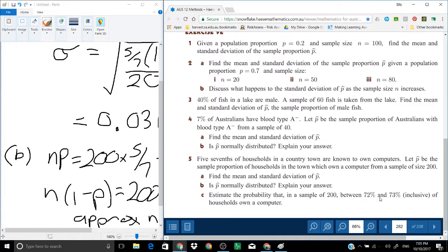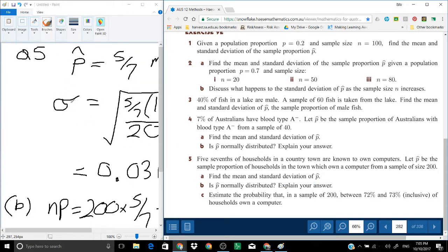Let's have a look at question C. You can estimate the probability that in a sample of 200, between 72% and 73% inclusive of households owns a computer. Since it is normally distributed, you can actually use a normal approximation for this. Basically, you can take your mean and standard deviation, put it into an NCD calculation, and have the lower bound be 0.72 and the upper bound being 0.73. I'm just going to leave that one for you to try.